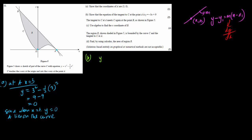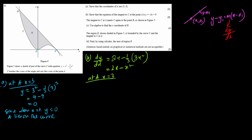So dy/dx equals 2x minus x squared. At point A, x equals 3, so dy/dx is 2 times 3 minus 3 squared, which is 6 minus 9, equals minus 3. That is the gradient of the curve at point A. Note that dy/dx = 2x minus x squared is the derivative of the curve, not the gradient itself — only when you substitute the value of the point do you get the gradient at that particular point.